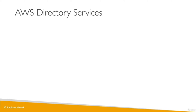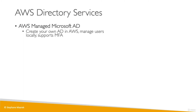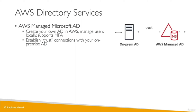Now let's get into AWS Directory Services. We have three flavors, and this is a managed service by AWS. The first one is called AWS Managed Microsoft AD. As you can expect, it's going to be Microsoft AD in the cloud. You'll be able to create your own AD in AWS, manage users locally, and it has support for MFA. You will have to establish a trust with your on-premise AD. In this diagram, the Managed AD is connected to the on-premise AD through a trust, and users can authenticate on either side.